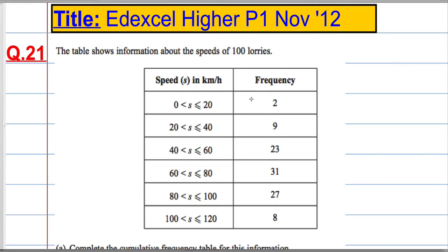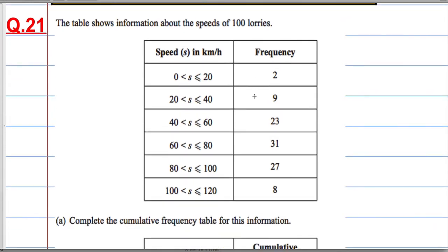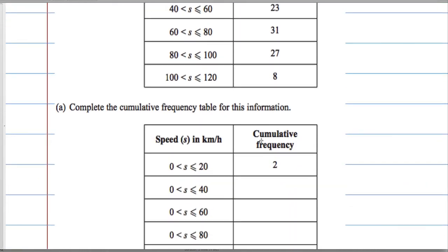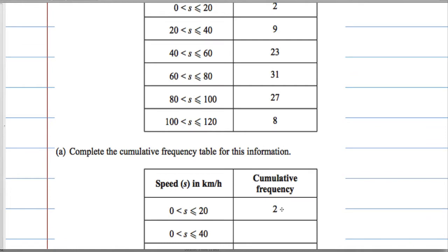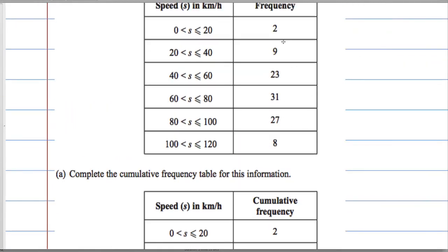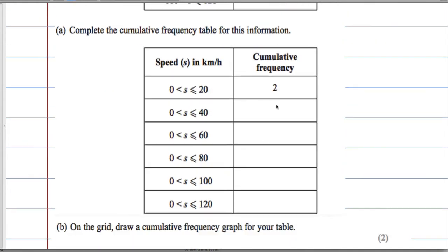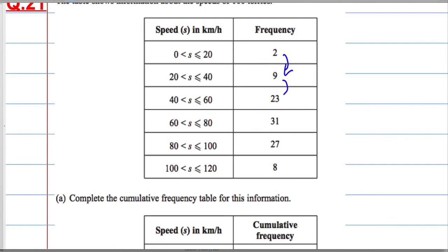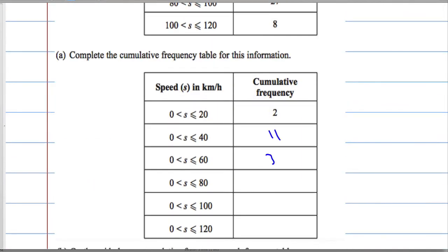Question 21 is the common cumulative frequency diagram question. We're given a table of information about the speed of 100 lorries and asked to complete the cumulative frequency table. To get the next value, we add on the previous one. So we add 9 onto 2 to get 11, then add 23 to get 34.